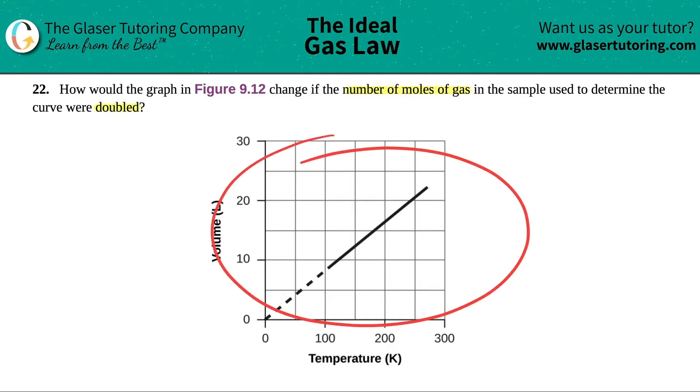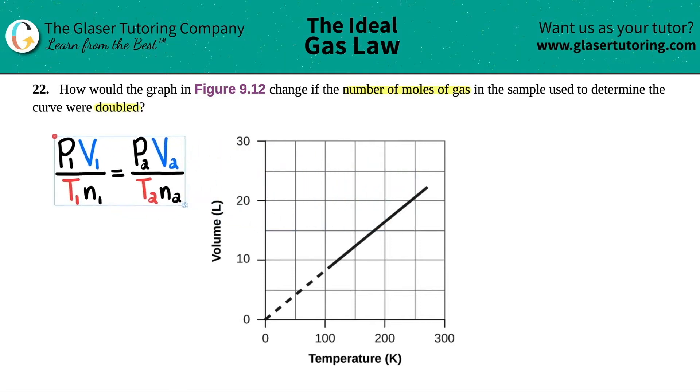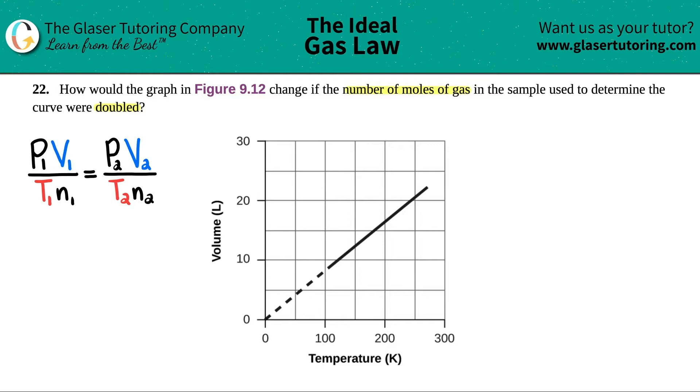So here's that graph from figure 9.12. We just have to basically figure out what's going on with the graph if the number of moles were doubled. Now this comes back to the combined gas law, and that formula is this right here. I'll put it over here. Now we have to basically keep the two units there, right?